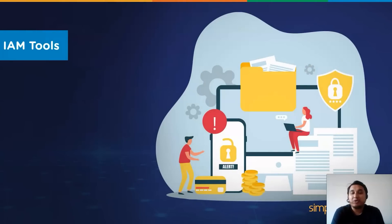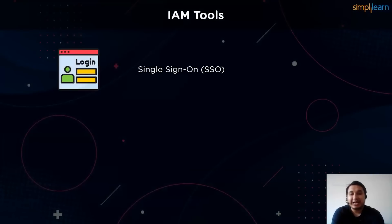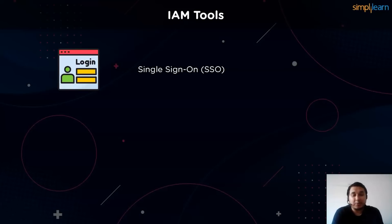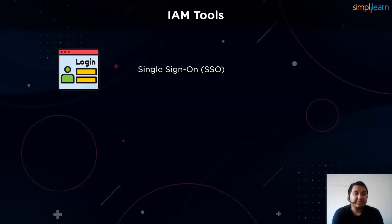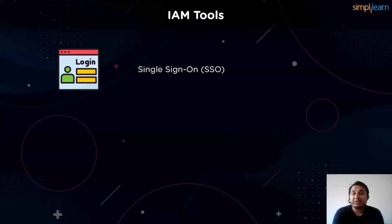With the working of IAM frameworks out of the way, let's cover some of the tools these systems work on. SSO is an IAM tool that enables a user to log into one of an organization's properties and automatically be logged into a designated set of other properties. For example, when you log into Google, you're automatically logged into your Gmail and your YouTube accounts. Single sign-on reduces friction since users don't have to keep track of different credentials for every application. For organizations, SSO helps in collecting valuable insights about user behavior and preferences since it tracks them as they move from one application to another connected by one single login.